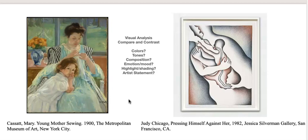With a visual analysis or compare and contrast, you're going to look for the visual elements — the color, the tone, the composition. With Mary Cassatt's painting, we see this happy vibe. The mother is focused on her sewing and the child is staring at us, the audience.